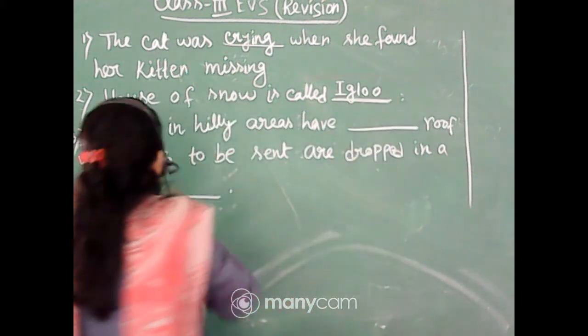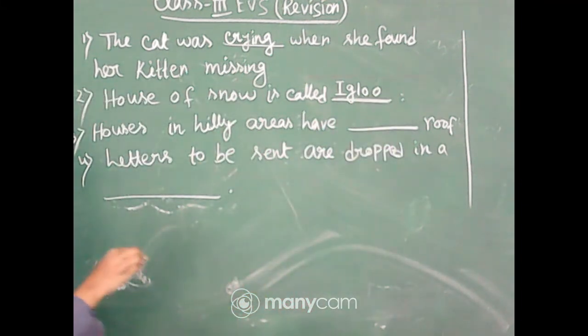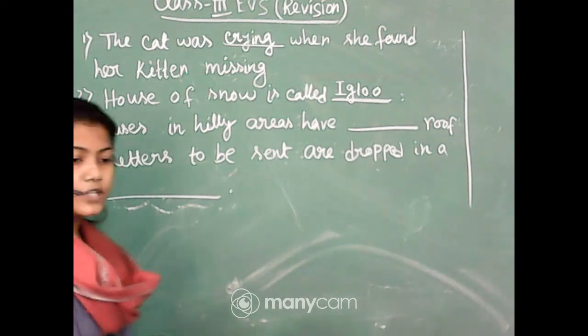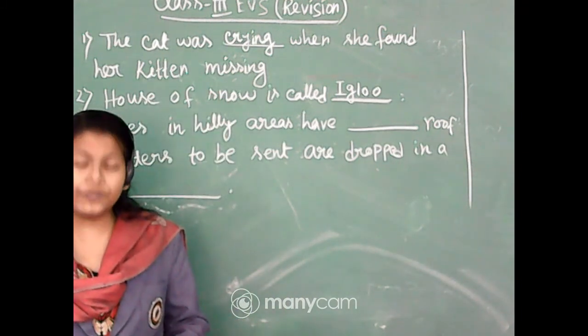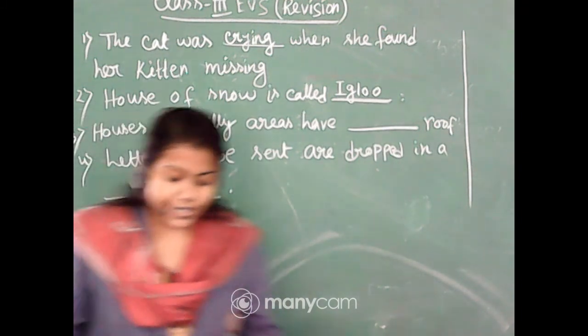Next number three, houses in hilly areas have dash roof. Houses in hilly areas have dash roof. Three options: flat,